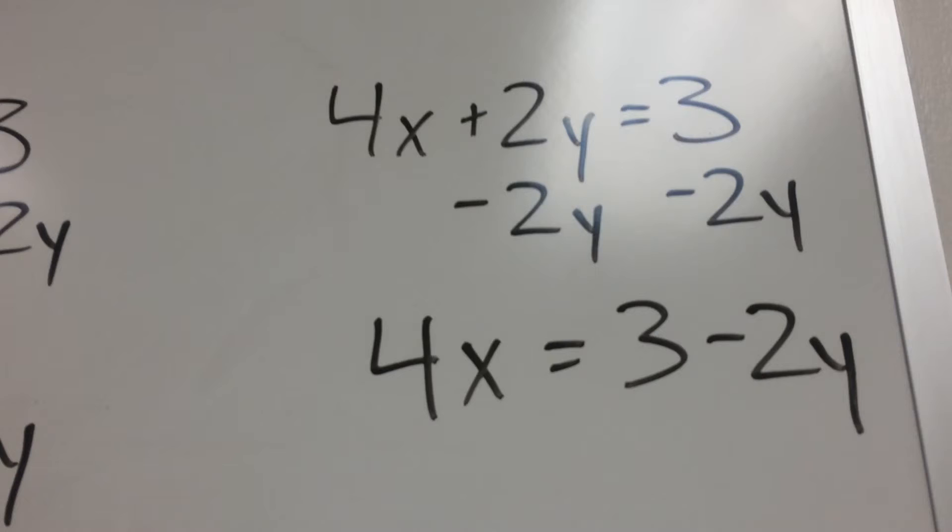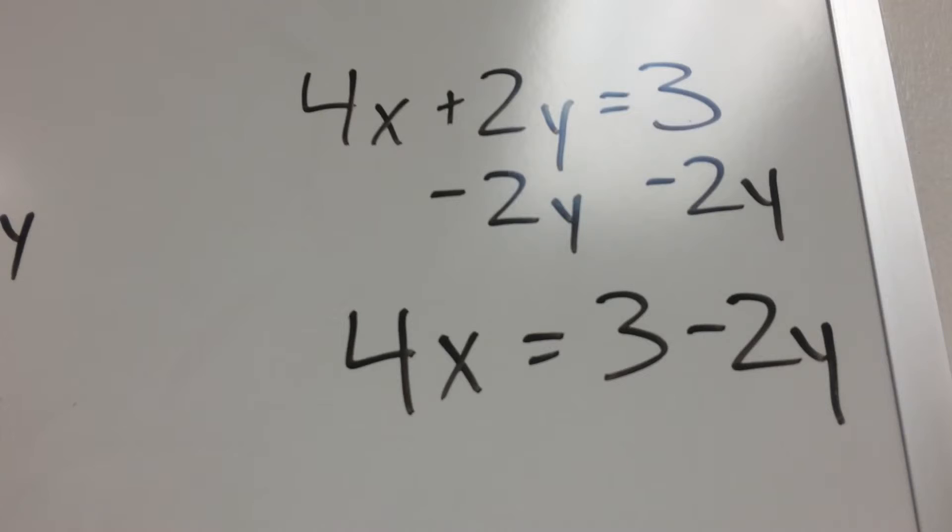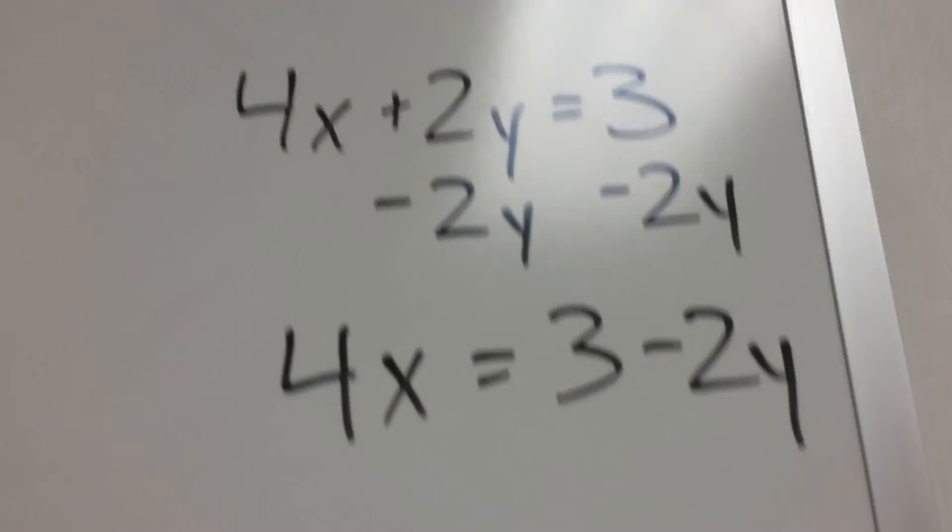But given proper feedback, the teacher can explain that they need to subtract the 2y in order for it to cancel out. And the student can learn and change so that in a future assessment, they're able to produce the correct answer 4x equals 3 minus 2y.